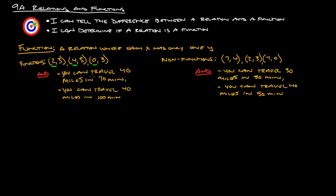For example, you can travel 40 miles in 70 minutes, and you can also travel 40 miles in 100 minutes — say, if you had stopped on the side of the road. The 40 here refers to the Y value, and the minutes are the X, because it's miles per minute, which is a slope — rise over run, which is always Y over X.